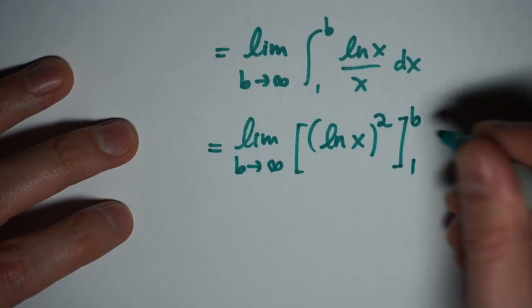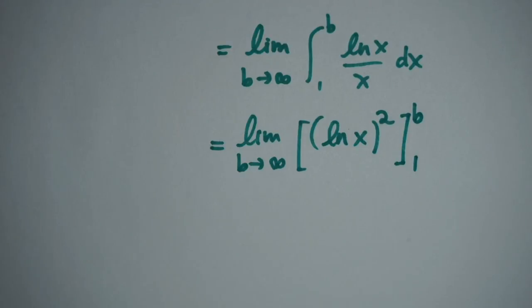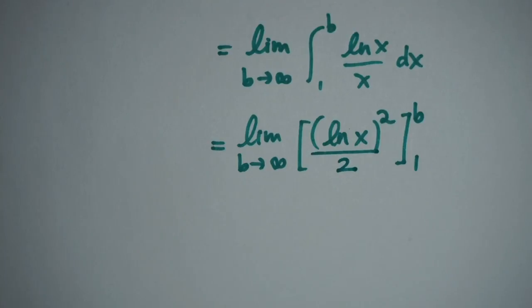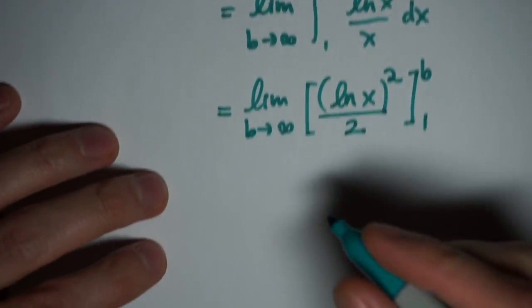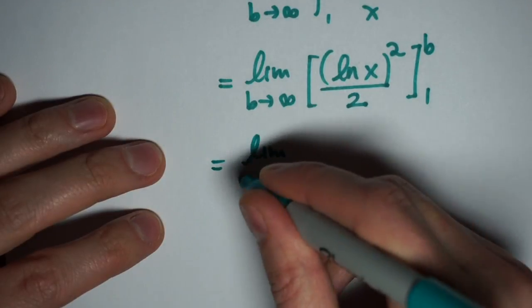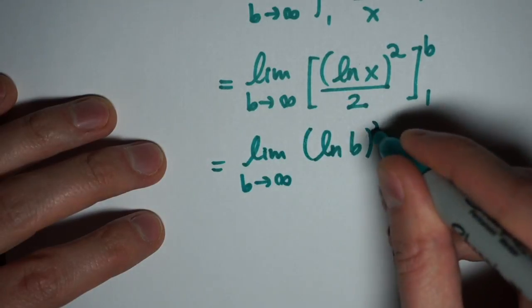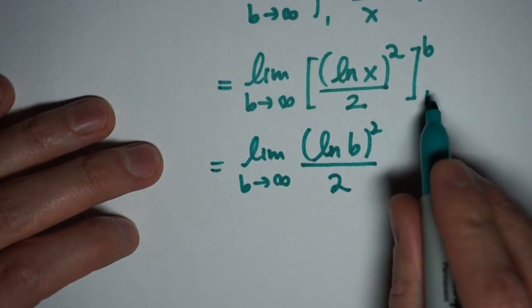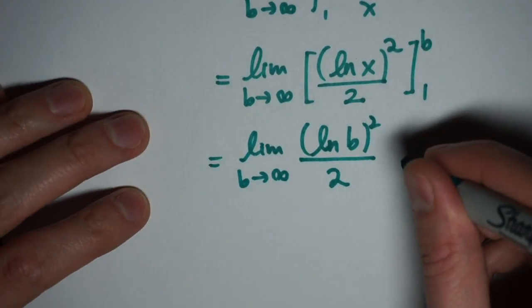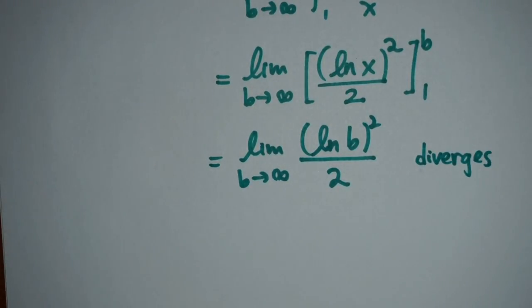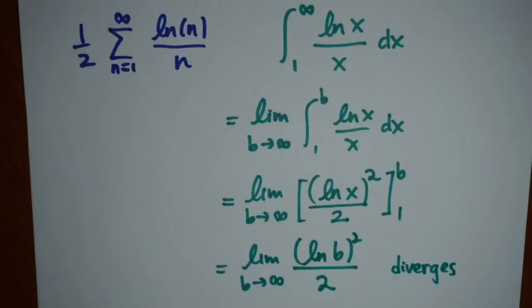So we end up with u squared over 2, or a natural log of x squared divided by 2. And we're going to evaluate this between 1 and b. So I get the limit as b goes to infinity of the natural log of b squared divided by 2 minus 0. When you plug 1 into the log x, you get 0. This limit is infinite because the limit of natural log of b as b goes to infinity is infinity. So I'm working with an infinite series here whose corresponding integral is divergent, which means the series itself is also divergent.